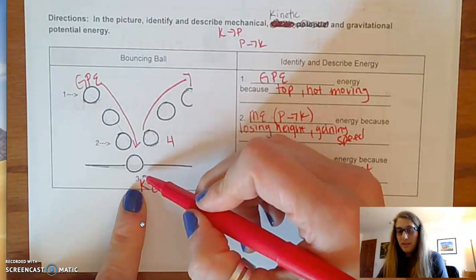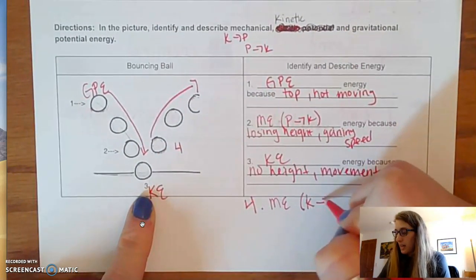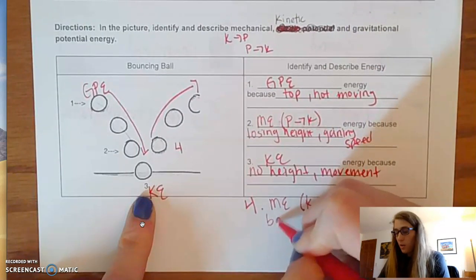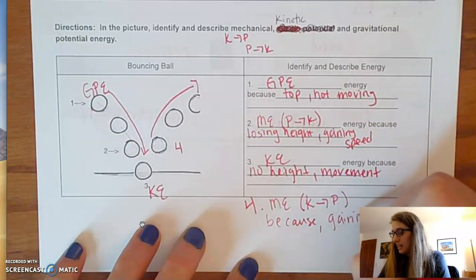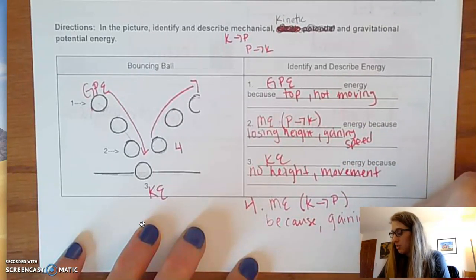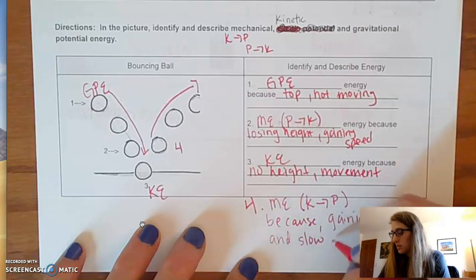Well, if it's going up, it's starting at kinetic, and it's getting higher. So it's K to P, and we know this because it is gaining height. That's why it's gaining potential, and slowing down. That's why it's losing kinetic.